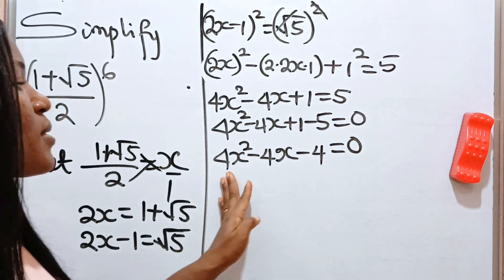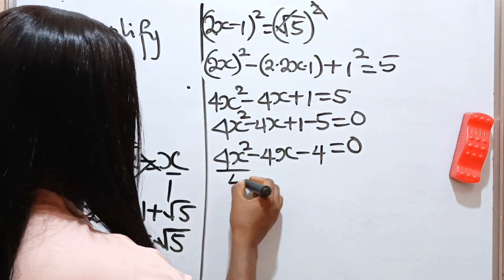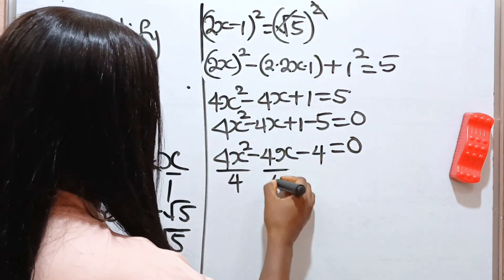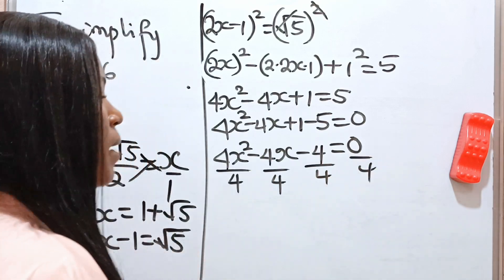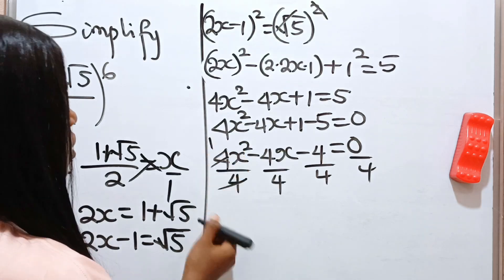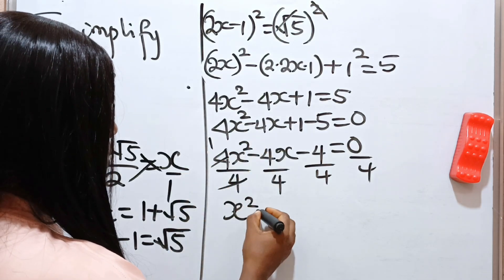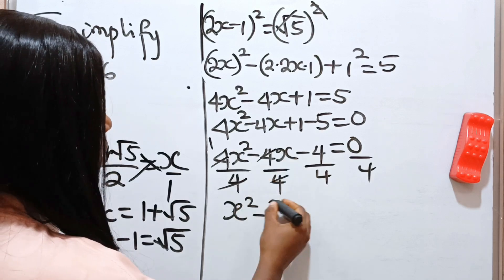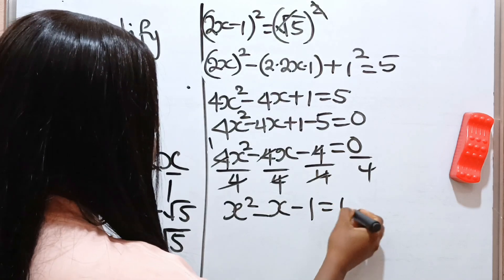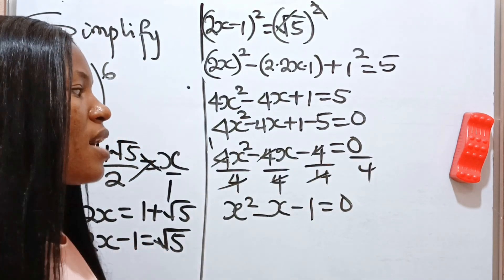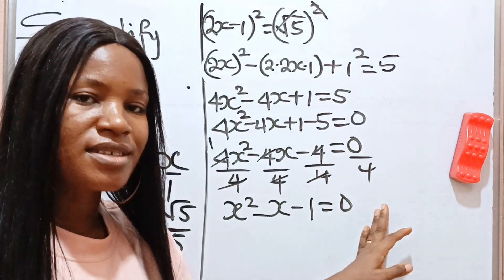In order to simplify this, let's divide through by 4. Dividing each term by 4 gives us x² minus x minus 1 equals 0. Note that 0 divided by any number is still 0. This gives us the key equation x² equals x plus 1.